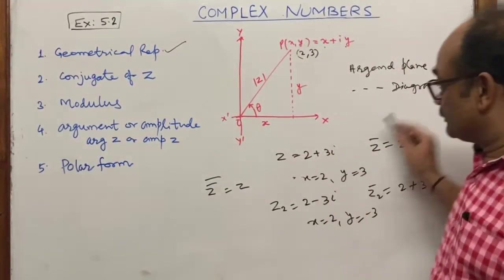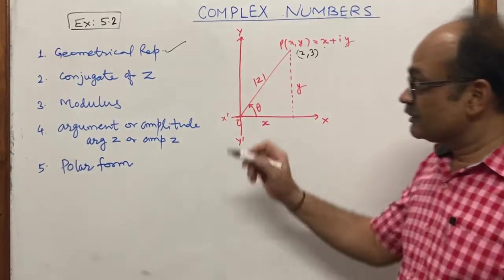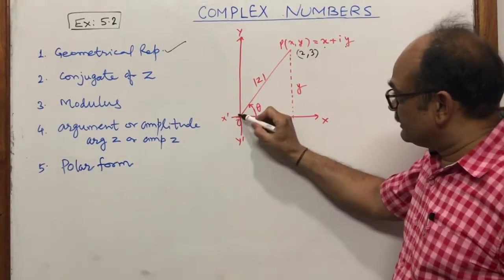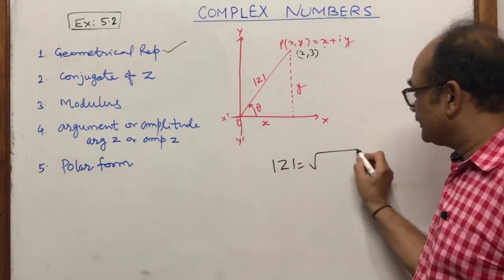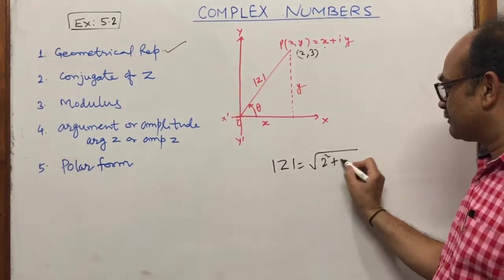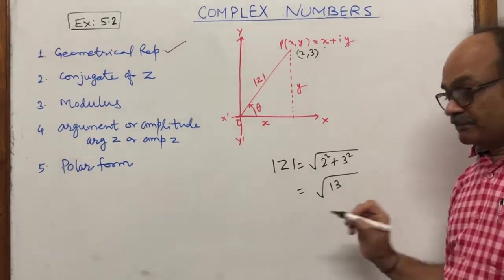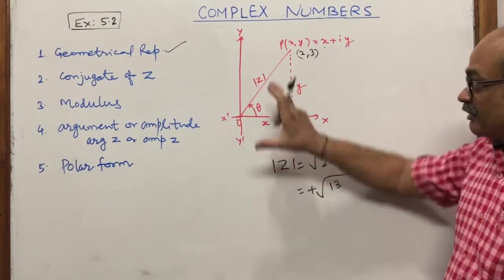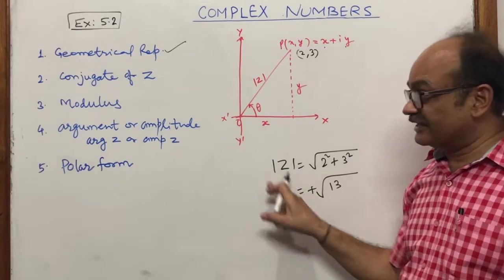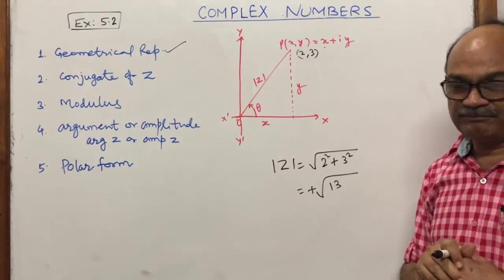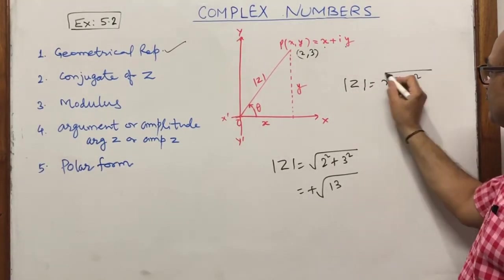The next point is the modulus of a complex number. The modulus is the distance from the origin, i.e., the hypotenuse. For example, for 2 plus 3 iota, modulus equals √(2² + 3²) = √(4 + 9) = √13. It is always positive since it is a distance, and is denoted as |z|. In general, |z| = √(x² + y²).